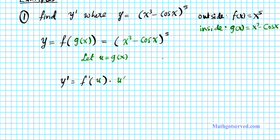Starting with the inner function: u equals x to the third minus cosine x. Taking the derivative, u prime equals 3x squared. The derivative of negative cosine is — the derivative of cosine is negative sine, and because of the minus sign here, we get plus sine x. So u prime equals 3x squared plus sine x.